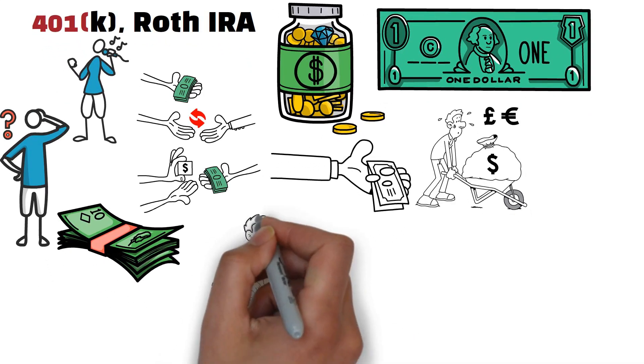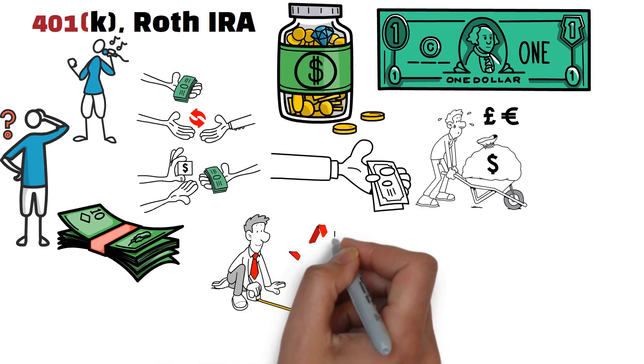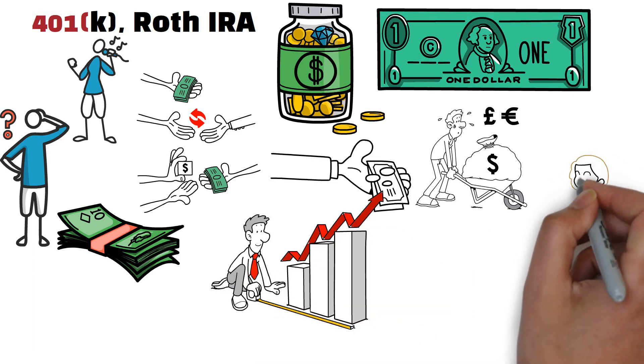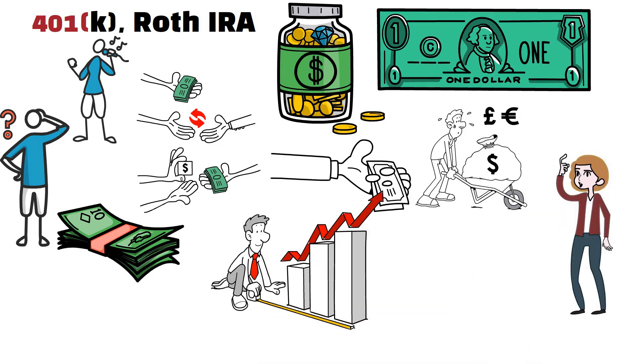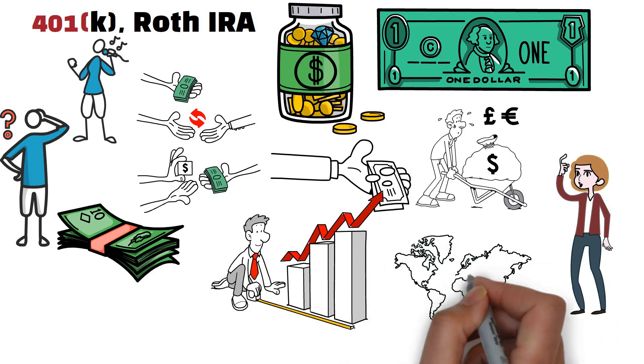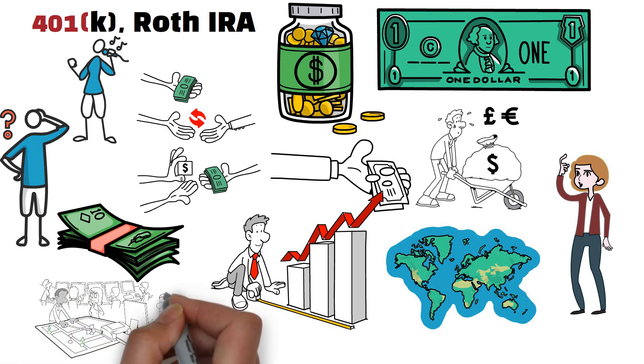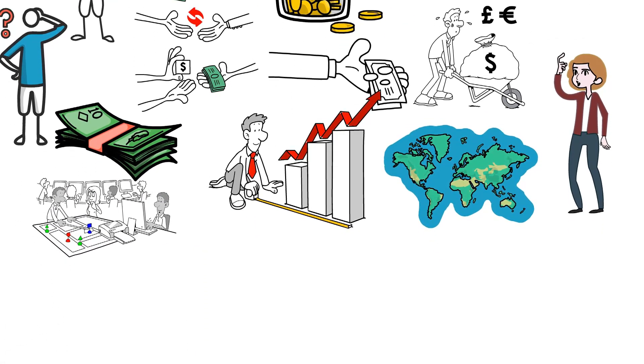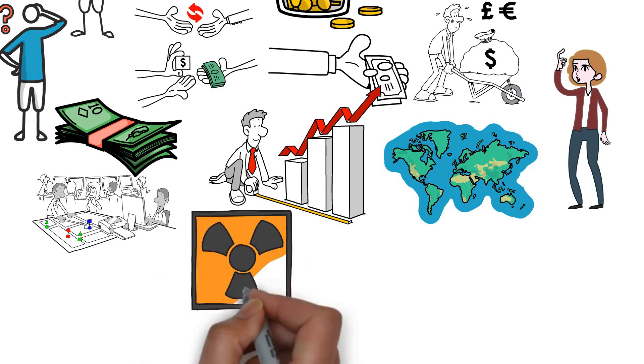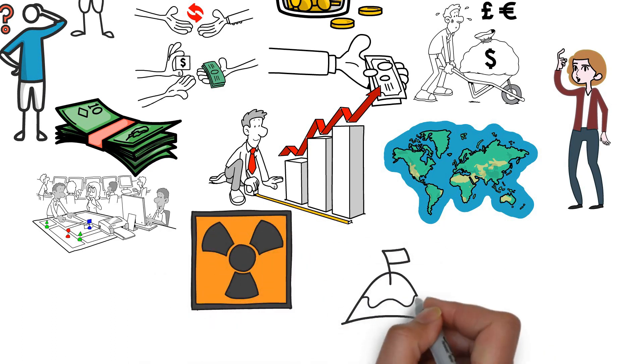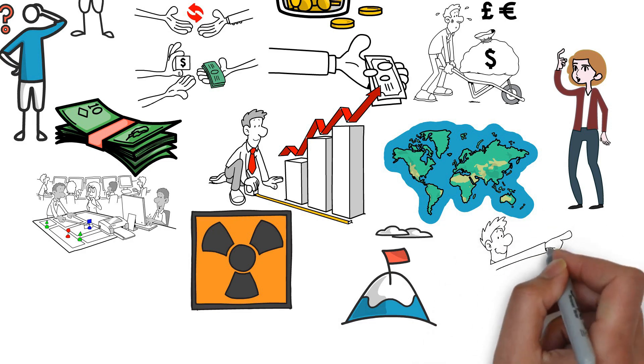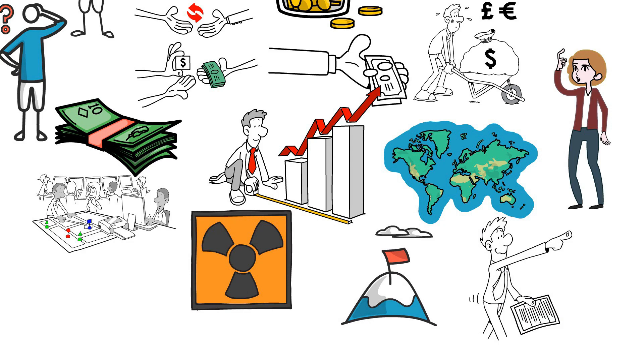However, simplicity isn't confined to the automation of financial processes alone. It extends to your mindset and approach. The world of finance is rife with jargon and complexity, but mastering financial resilience involves simplifying your investment strategy. Diversification, understanding risk, and aligning investments with your goals don't need to be shrouded in complexity. Demystifying the financial landscape allows you to navigate it with confidence and clarity, ensuring that your journey to financial unbreakability is not just smooth but also empowering.